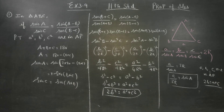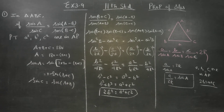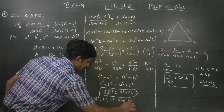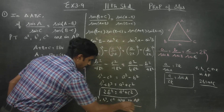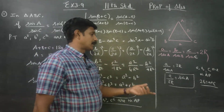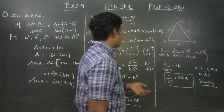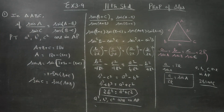Since we have shown 2b² = a² + c², this proves that a², b², c² are in AP. Using the sine formula a/sinA = b/sinB = c/sinC = 2R throughout. You can go and check with the book. Thank you.